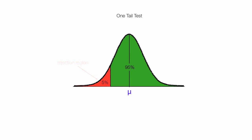The sample mean has to show up in either the red area or the green area, because these two add up to 100%. In this example, I'm using a 95% confidence level, and you could actually use any level you wanted to.